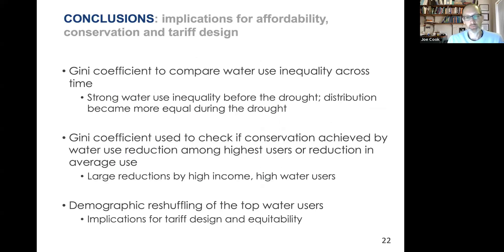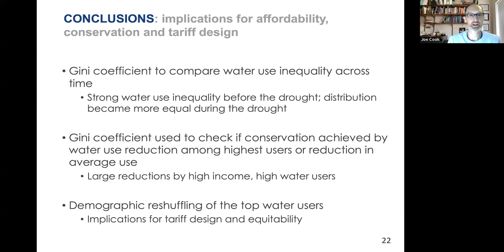Conclusions on the Cape Town work: we used the Gini coefficient to compare water use inequality over time in the presence of shocks — droughts and major tariff changes. The distribution became more equal. We saw an interesting pattern of the correlation between income and water going into reverse during the drought, basically coming back after the drought to similar levels as before. For those interested in energy, these calculations could also be done on energy use — there's a new NBER working paper by Severin Borenstein on energy hogs in the US, and there's potential in this network to think about both water and energy use simultaneously and their interrelation.